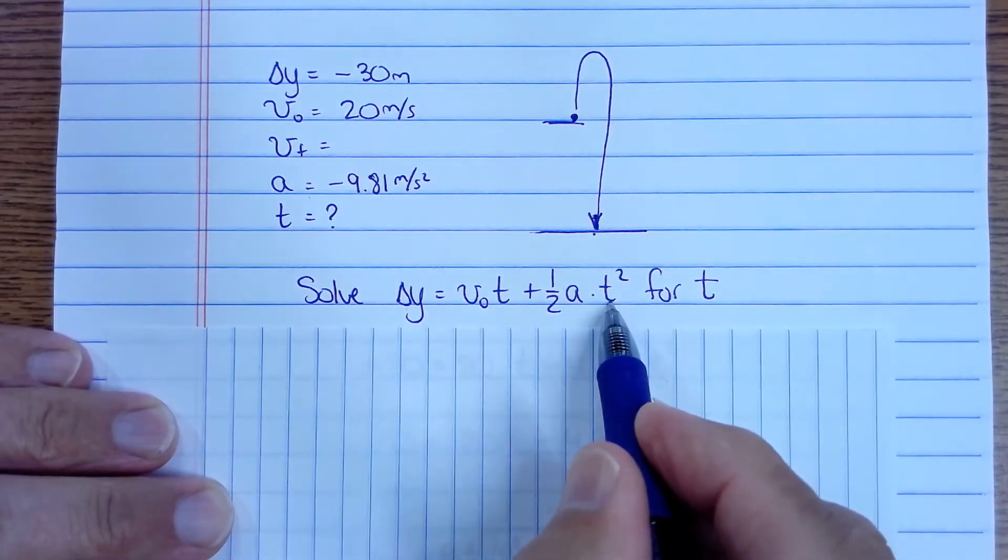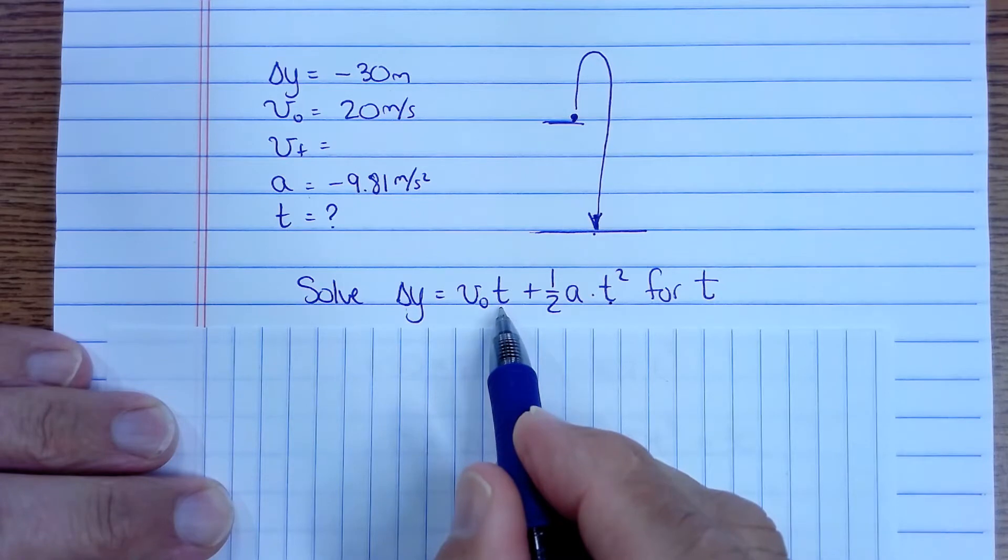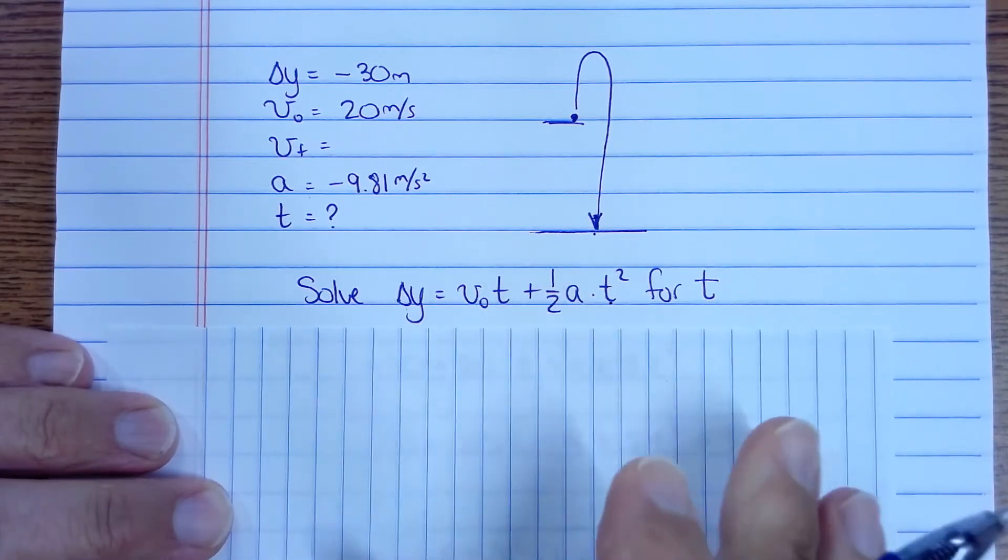So how do you solve this for t? Because t is there, it's squared, and t is there. So in order to solve it you have to use the quadratic formula.